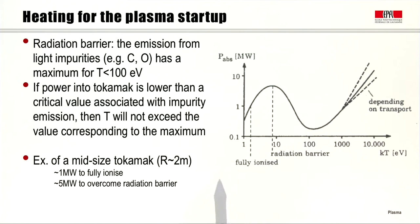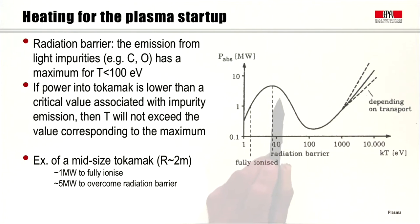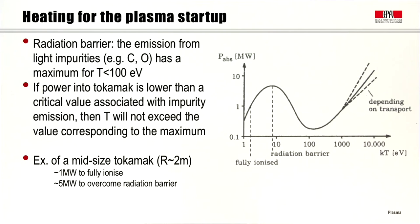Typically for a mid-sized tokamak — taking an example of a 2-meter major radius tokamak — you need something like a megawatt to fully ionize your gas to make the plasma, and you need more than that, something like 4–5 megawatts, to overcome this radiation barrier. It's only after that level, once the radiation barrier is overcome, that we manage to keep increasing the temperature towards values of interest for thermonuclear reactions. The efficiency and therefore the slope of the curve of temperature increase with additional power depends on the levels of transport that the plasma has.